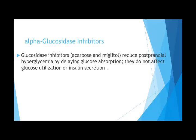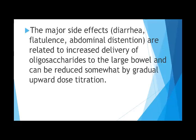Alpha-glucosidase inhibitors such as acarbose reduce postprandial hyperglycemia by delaying glucose absorption. They do not affect glucose utilization or insulin secretion; they act within the GI tract and are not absorbed, so they do not affect peripheral utilization. Major side effects include diarrhea, flatulence, and abdominal distension related to increased delivery of oligosaccharides to the large bowel, which can be reduced by gradual upward dose titration.